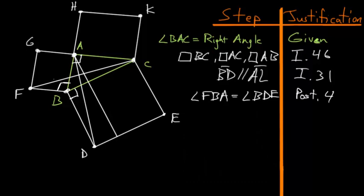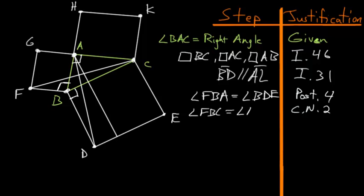With those angles equal to each other, let's use Common Notion number 2 and add angle ABC to each of them. When we do that, we now have that angle FBC is equal to angle ABD.